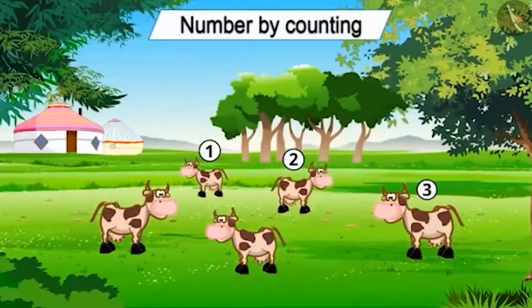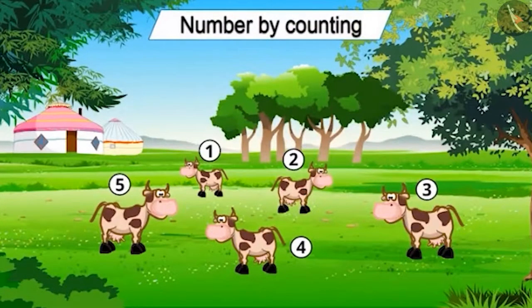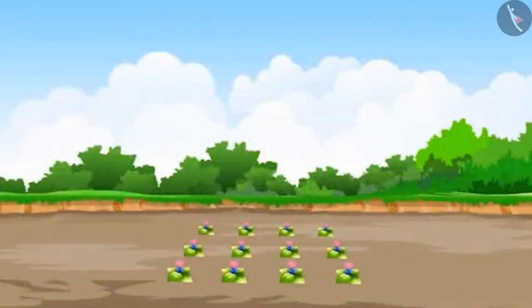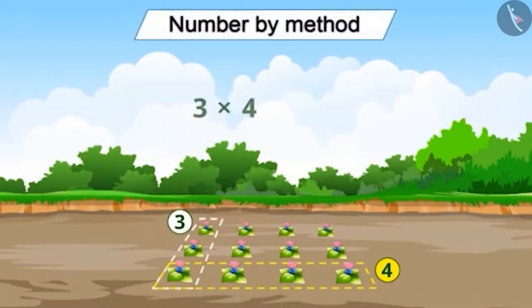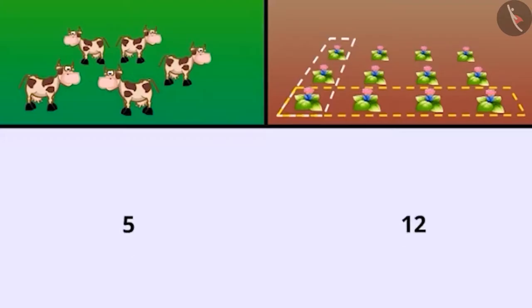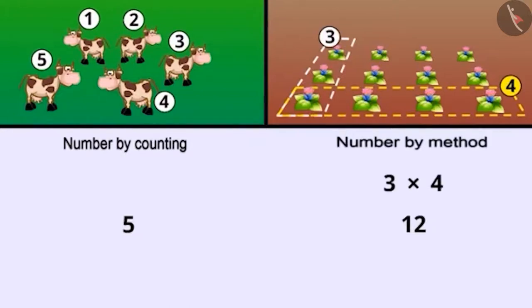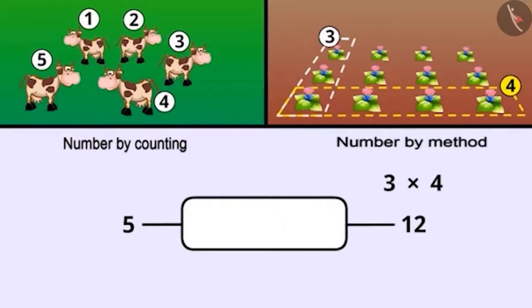Usually, we get the count of objects by counting them one by one. Similarly, in some cases, we get the count by applying some method. The numbers that can be found by counting or by applying some method are called exact numbers.